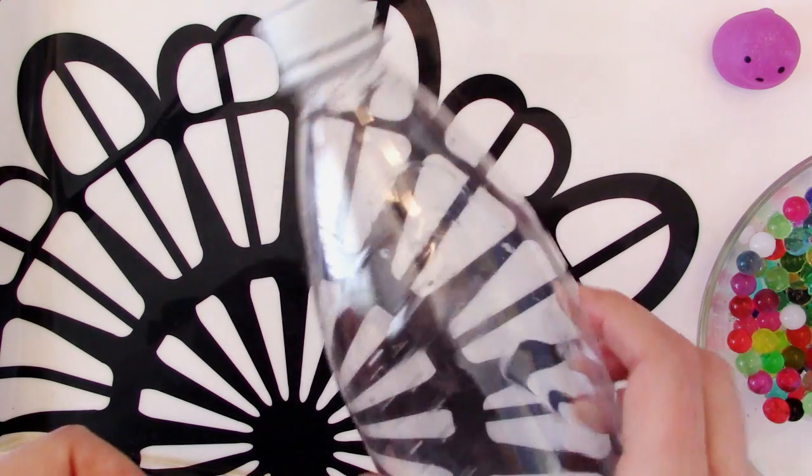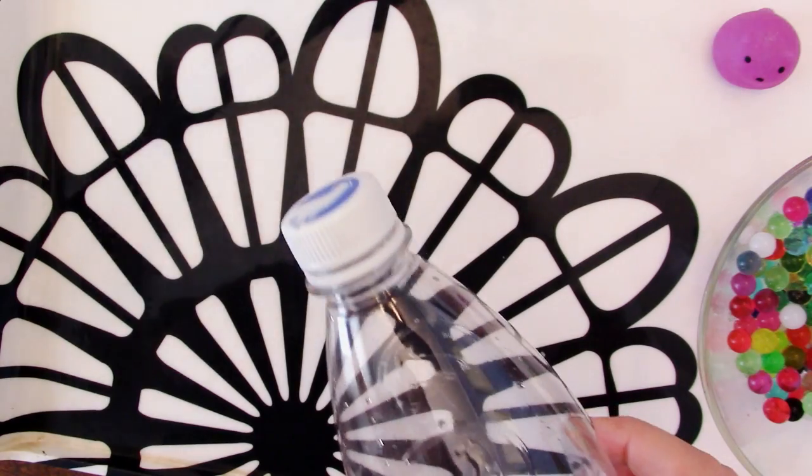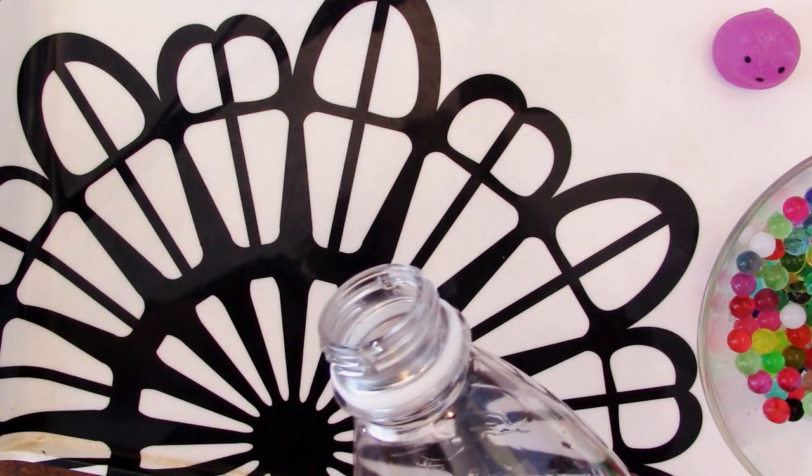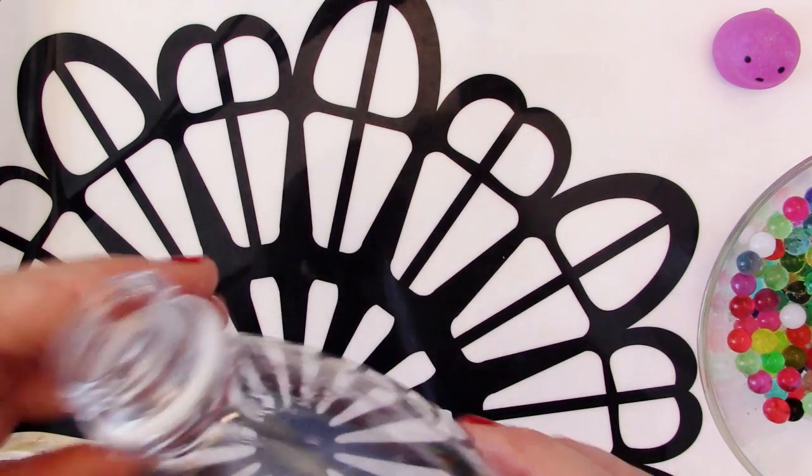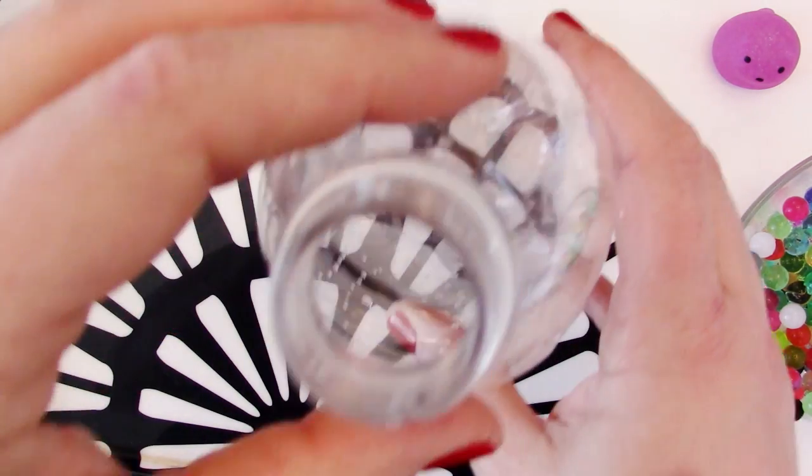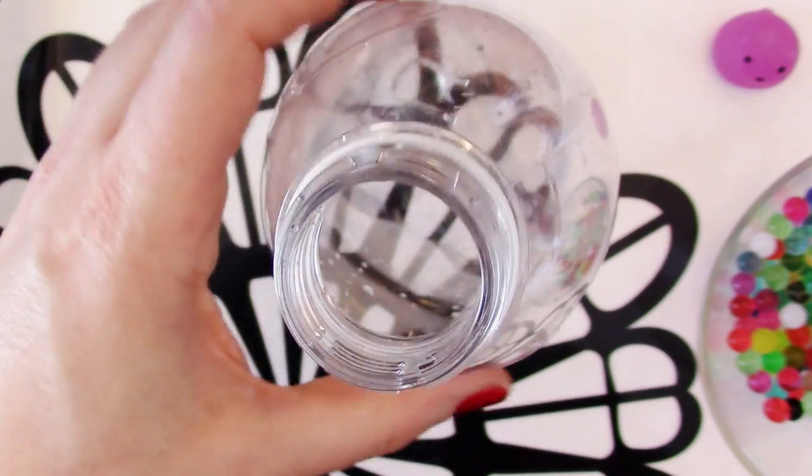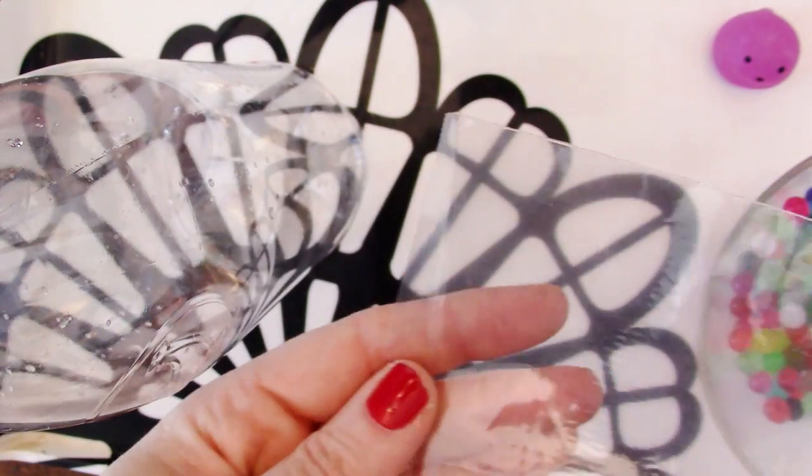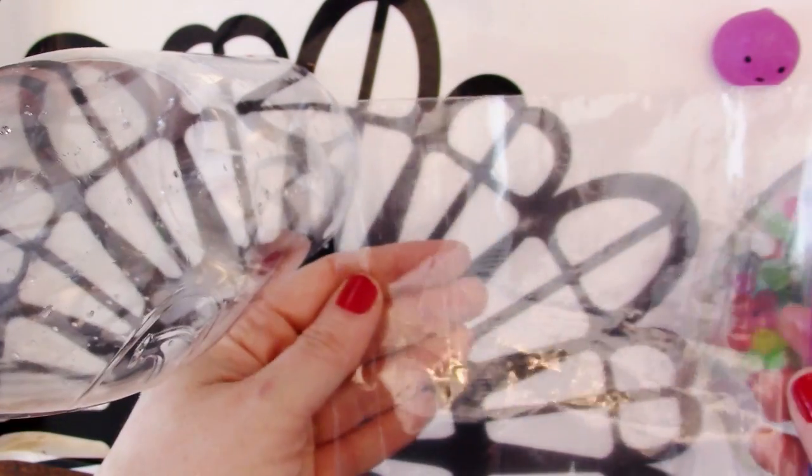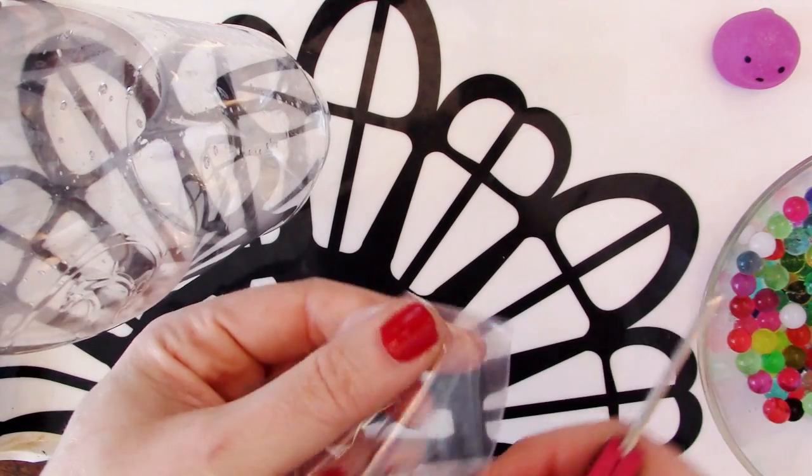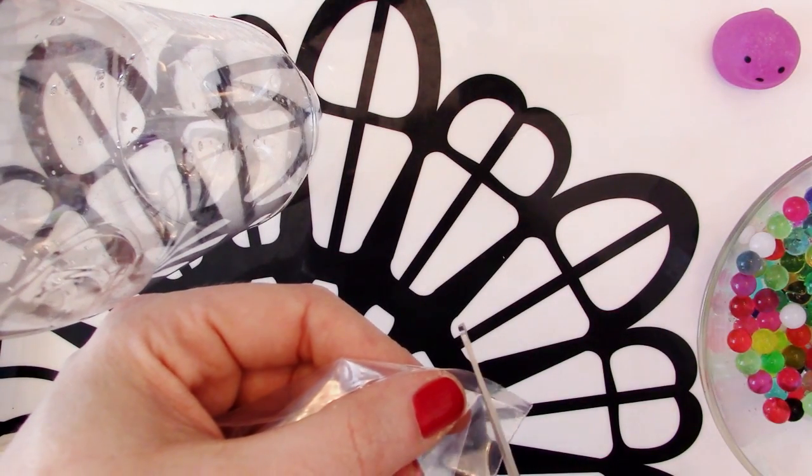Then you're going to need a plastic bottle. It doesn't really matter what kind of bottle, as long as it's big enough to hold the beads that you've expanded. Take off the top. Then what we need to do is create a funnel that will let you transfer all the water beads inside of the bottle. You can use an actual funnel if you have one. For this project, you can use the plastic bag that came with your kit in order to funnel the water beads into the bottle.